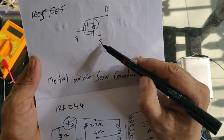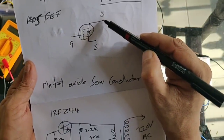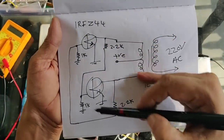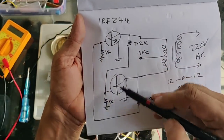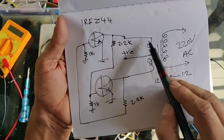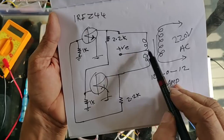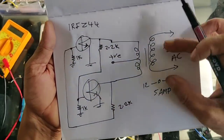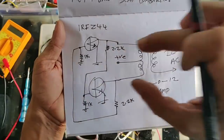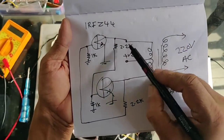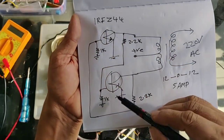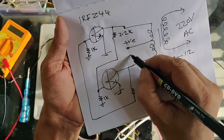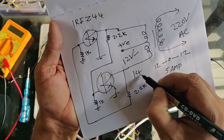This is a metal oxide semiconductor, MOSFET. This is a metal oxide semiconductor, MOSFET — 14V. Okay.